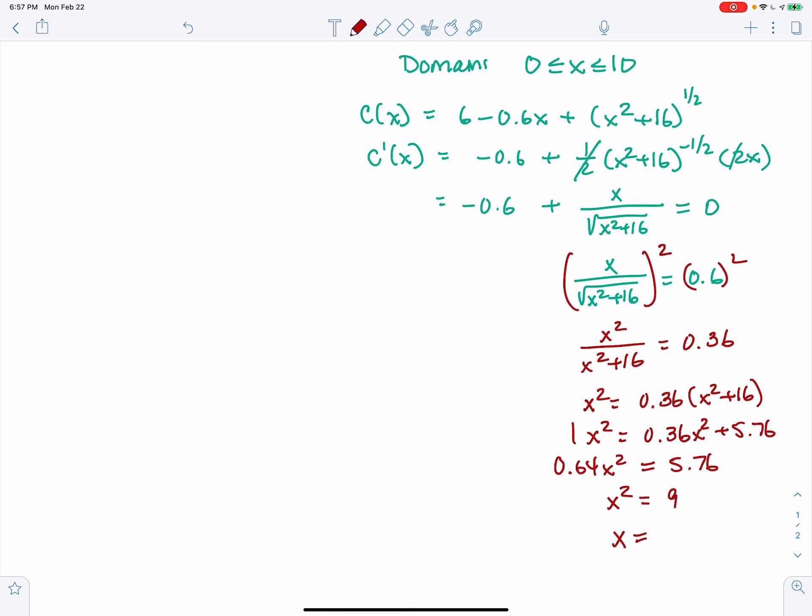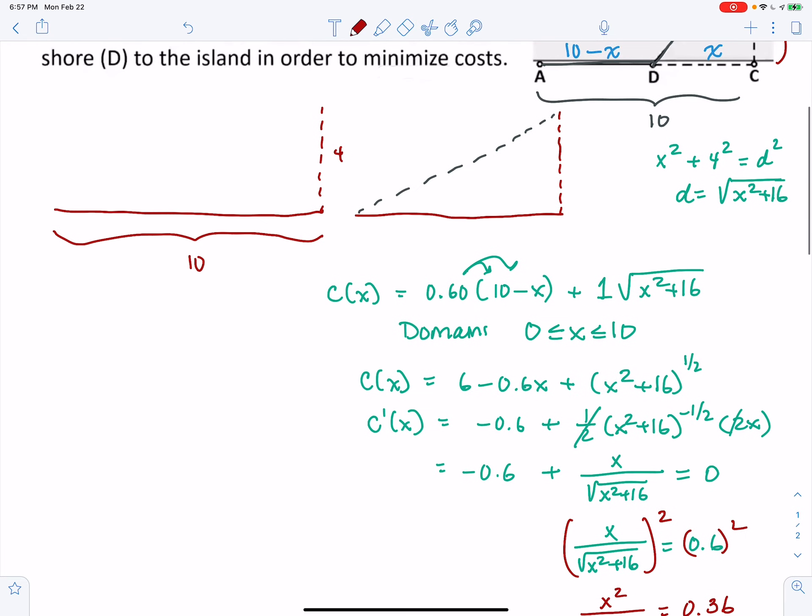Now, ordinarily, we would say plus or minus 3, but we know we can't have negative 3 as an answer. So we're just going to use the positive square root, which is 3. So that's our critical number. Something is happening there. I would lay best that it's a minimum, but I'm not a betting man. So we'll just have to come back up here and see.